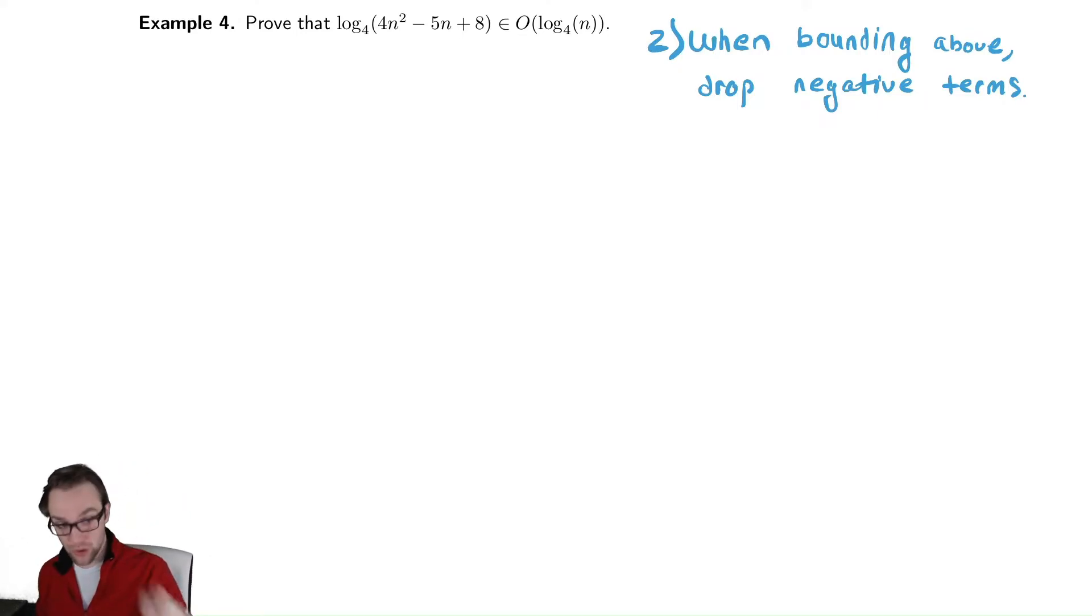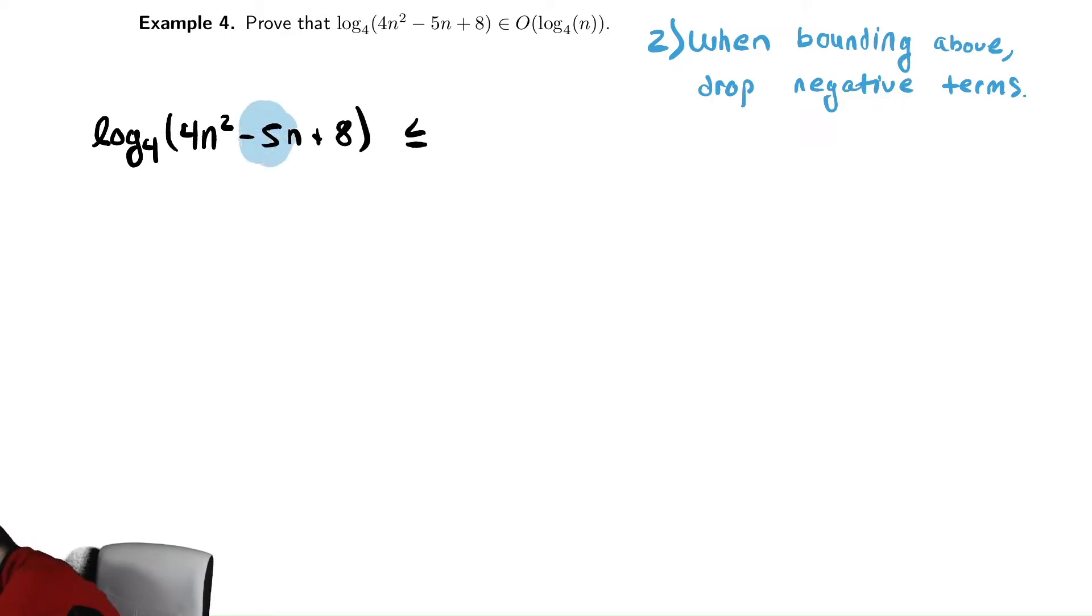So, using those two rules, we're going to replace all lower order terms with equivalent higher order terms, and drop all negative terms. Given the expression that we started with, log base 4 of 4n squared minus 5n plus 8. We bound it above, we see a negative term appearing here. So let's do that rule first. We drop the negative term, and we're left with 4n squared plus 8.